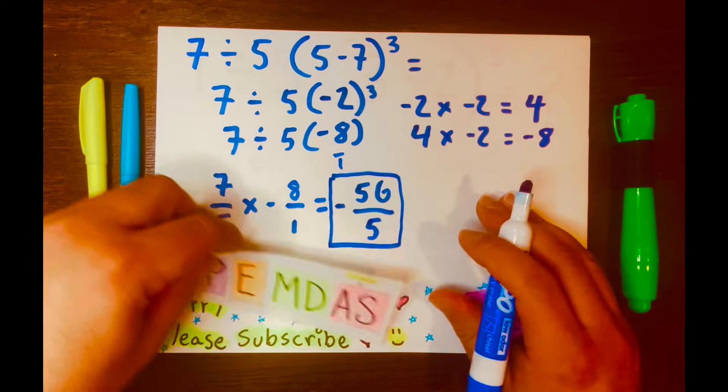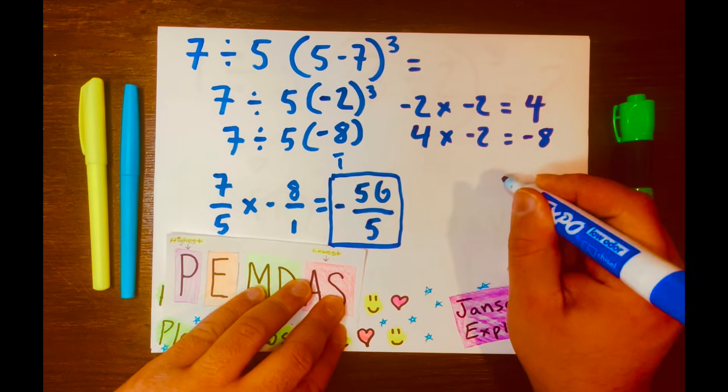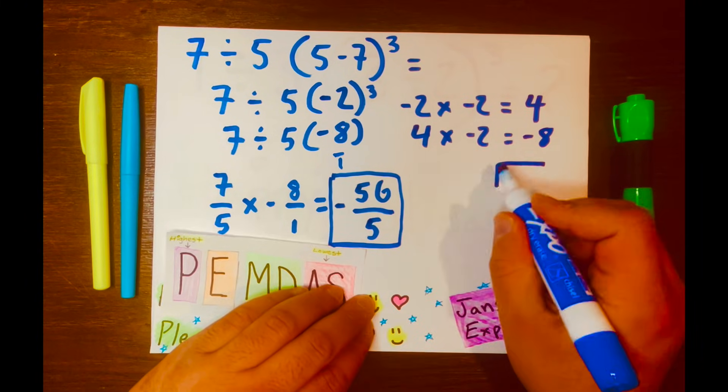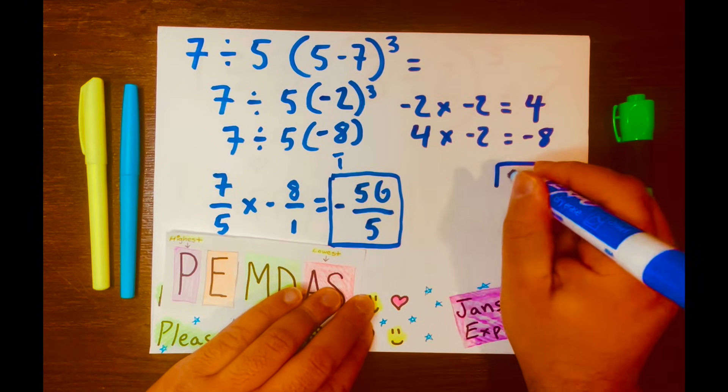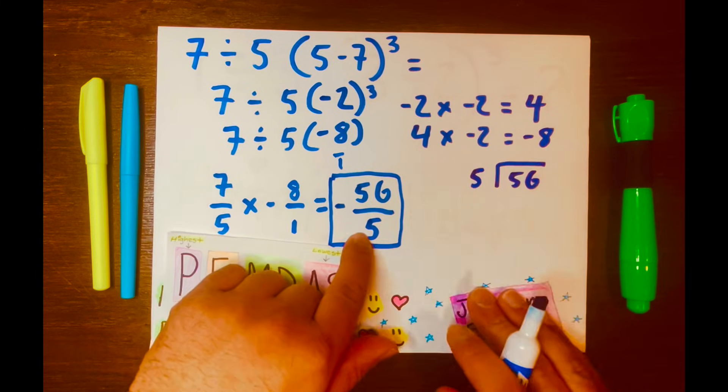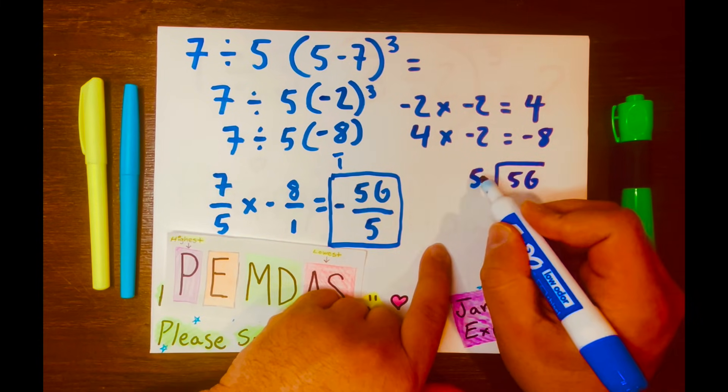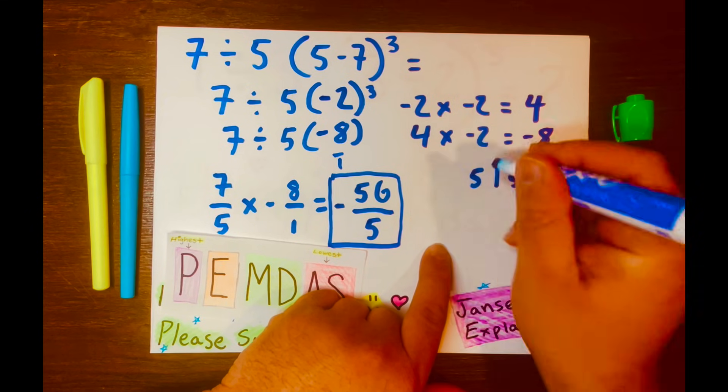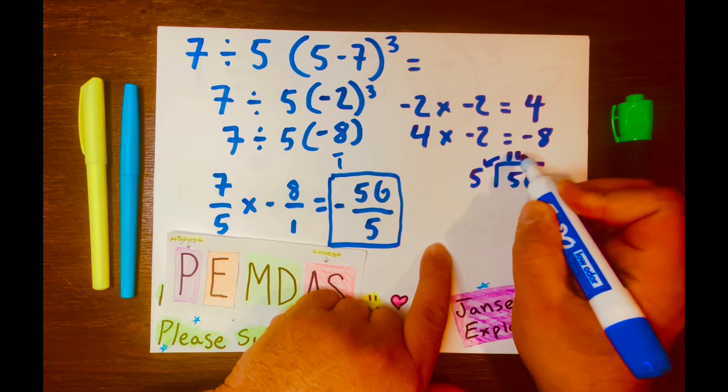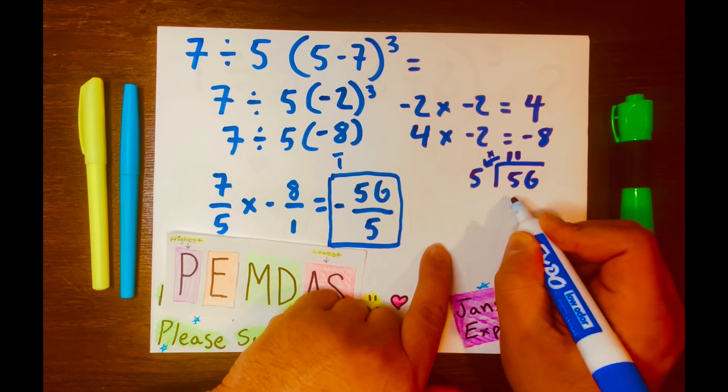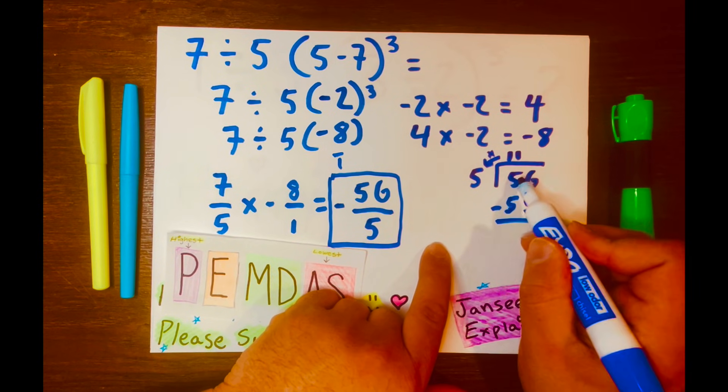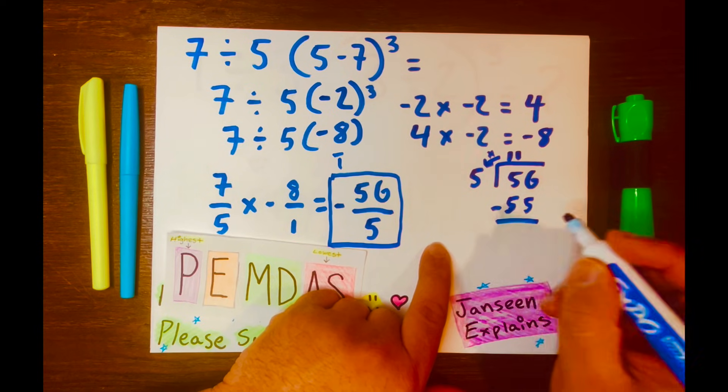But let's get a decimal. To get a decimal, we're going to need to do long division. That is the long division symbol. And 56 will be the dividend, and the 5 will be the divisor. How many times can 5 fit into 56? 11 times. So, I'll write 11 and multiply 11 times 5. That is 55. And we subtract 56 minus 55. That's 1.